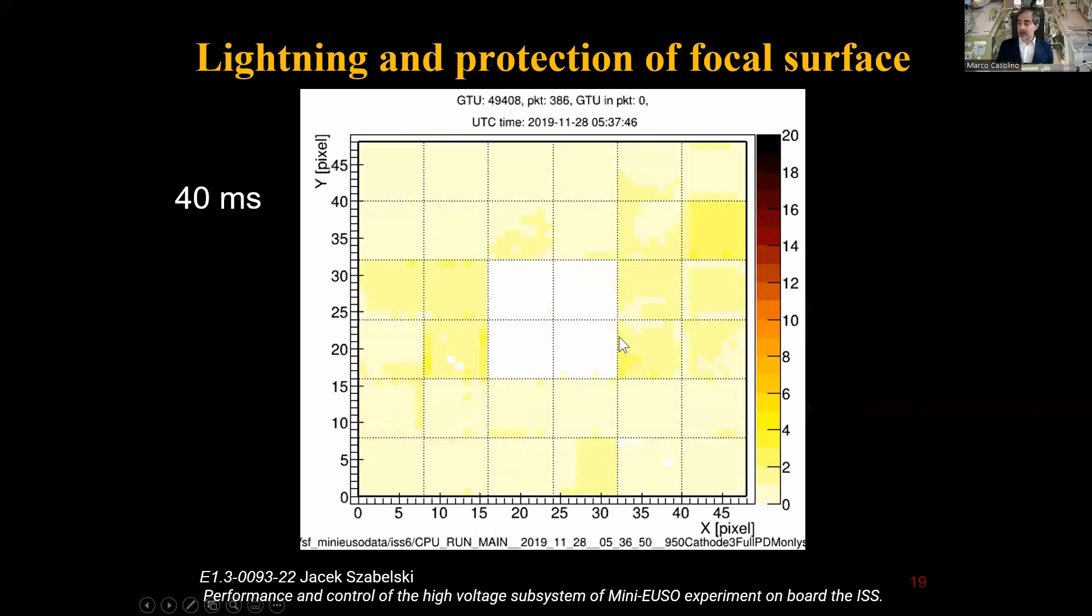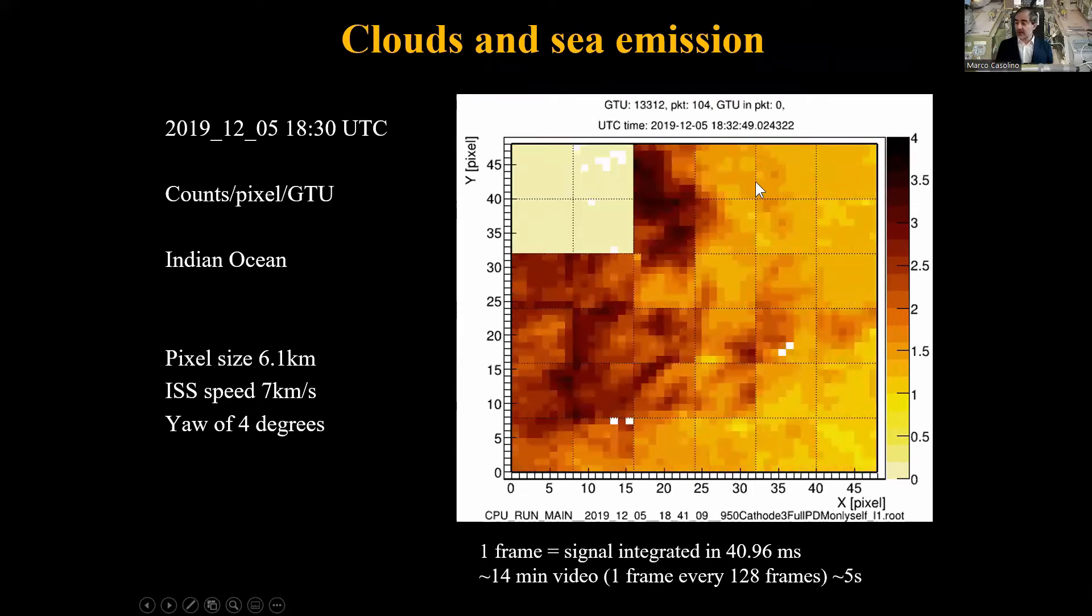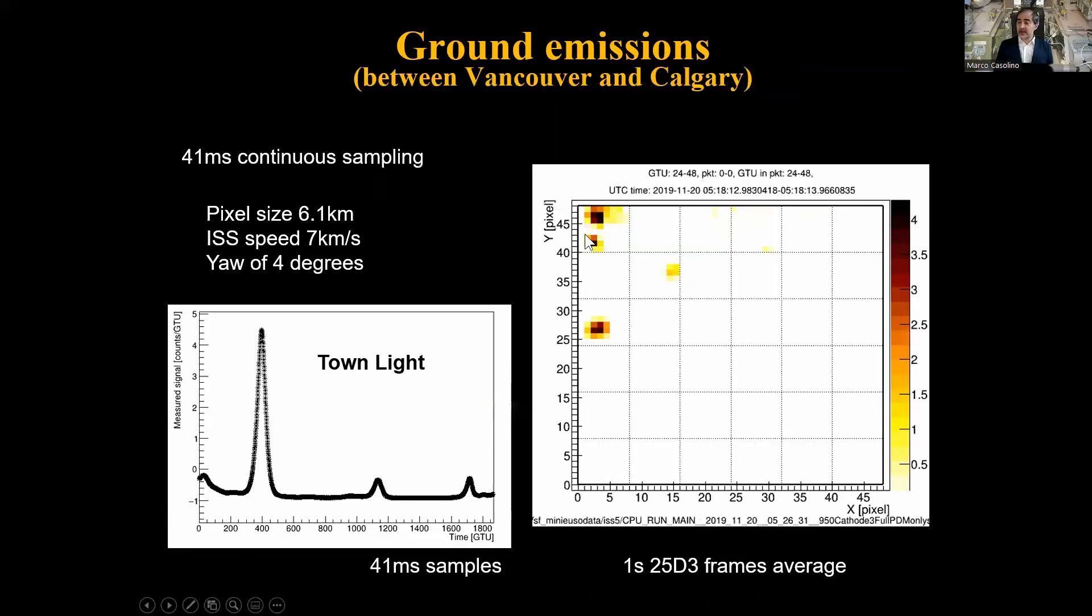This is how events look in our field of view. This is 48 by 48 pixels. Dark means very bright. If there is lightning, this is a 40 millisecond acquisition, the high voltage power supply is automatically shut off. There is a talk by Jacek Szabelski on the performance of the voltage system. This is a fantastically nice high voltage system that switches off every time there is lightning in order to preserve the safety of the photomultipliers. This is how clouds appear. Clouds are very bright because of moonlight or reflection of the airglow.